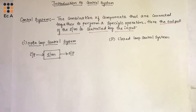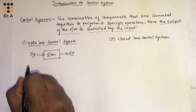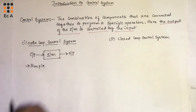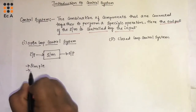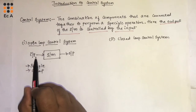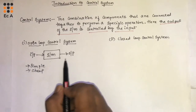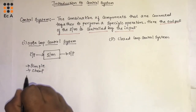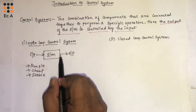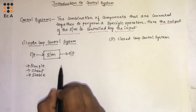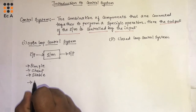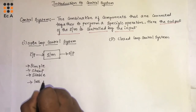Coming to its advantages: this control system is very simple in construction. Since it is simple in construction, we can say it is cheap. And since it takes the input, processes it, and provides the output, this system is stable. Since there is no closed loop or feedback here, this system is less accurate.